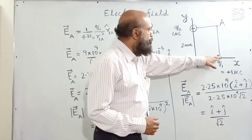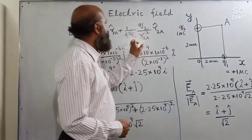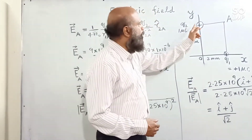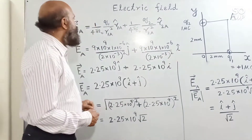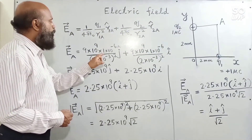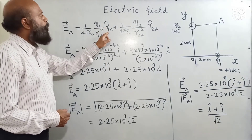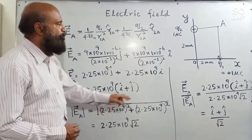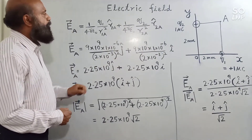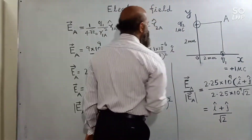Similarly, the electric field at the point due to the second charge has r̂2A as the unit vector from the second charge to the point, acting along the positive x-axis. We substitute (1/4πε₀) = 9×10⁹, the charge is 1×10⁻⁶ (microcoulomb), r̂1A is the unit vector along the y-axis, which is ĵ. The field due to the second charge acts along the x-axis, so its unit vector is î.